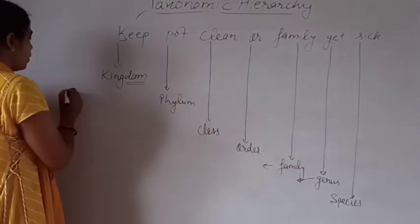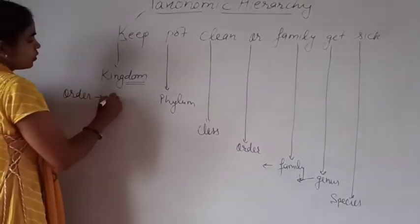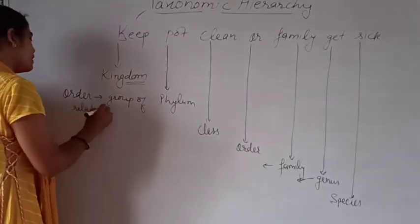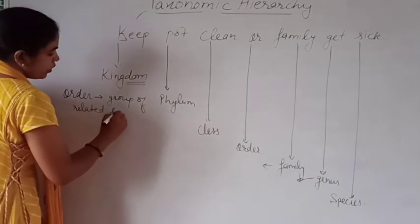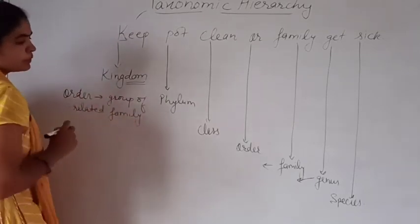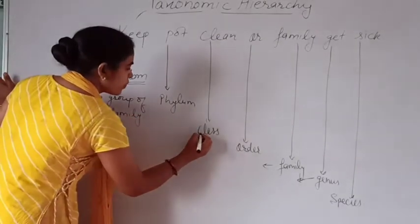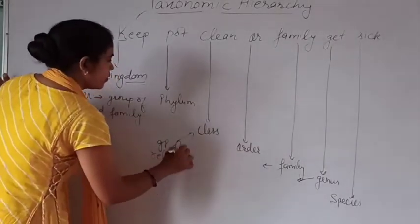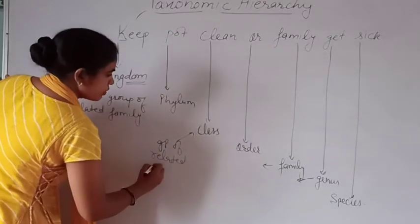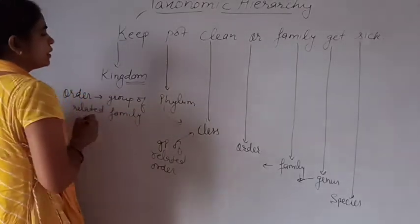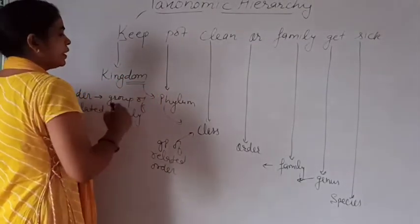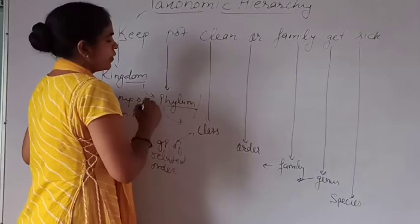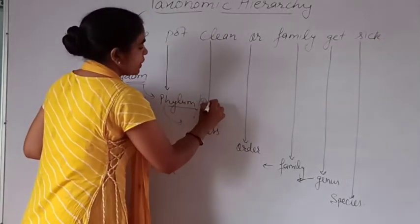Order is a group of related families. Class is a group of related orders. Phylum is a group of related classes. Kingdom is a group of related phyla. In the case of animals we use 'Phylum,' while in the case of plants we use the term 'Division' in place of Phylum.